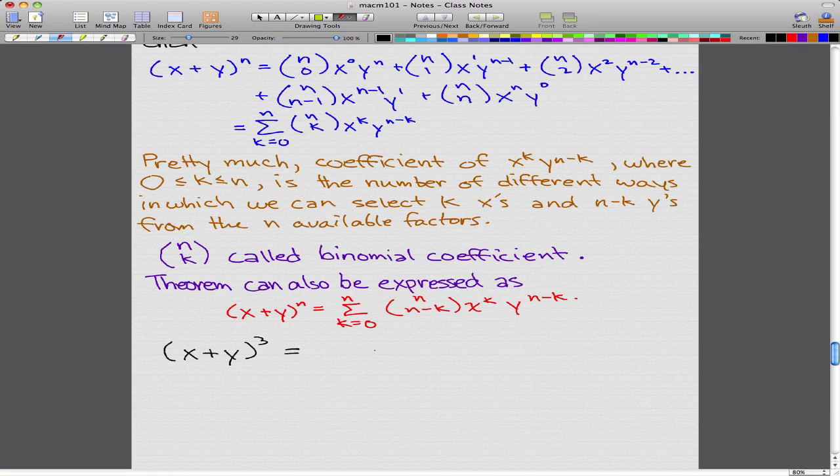then we probably have to expand it out like so: x plus y, x plus y, x plus y, and then we'll do FOIL, and then we'll expand this. So, multiplying them all together would get something like x to the power of 2 plus 2 times xy plus y squared.